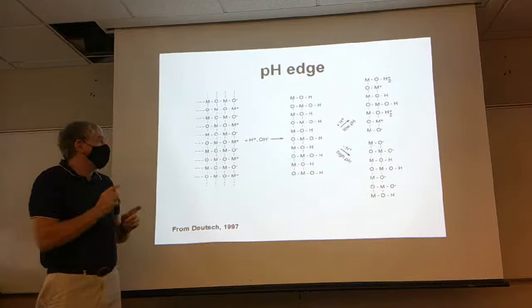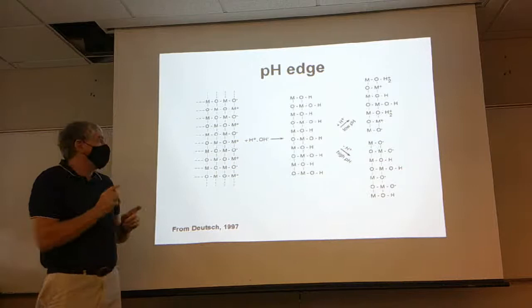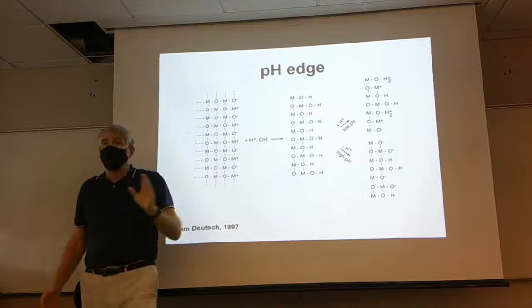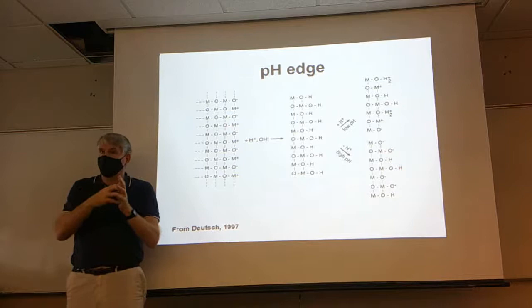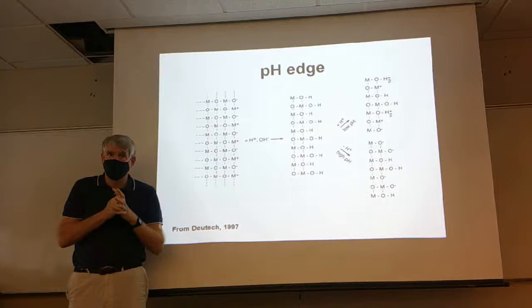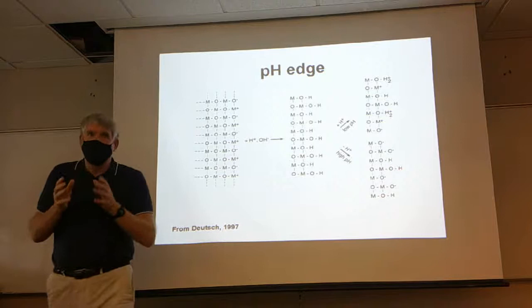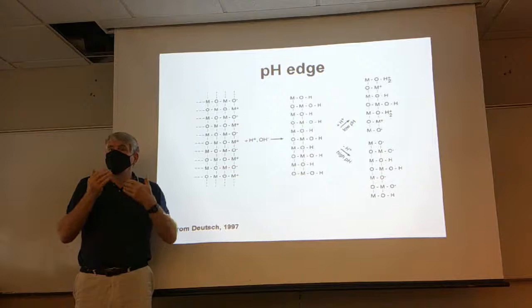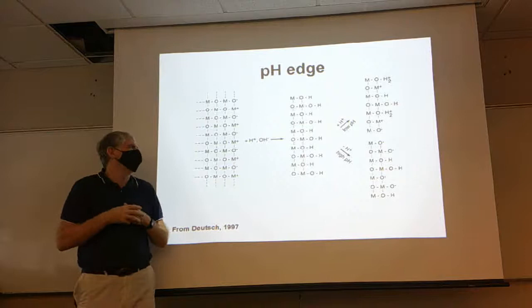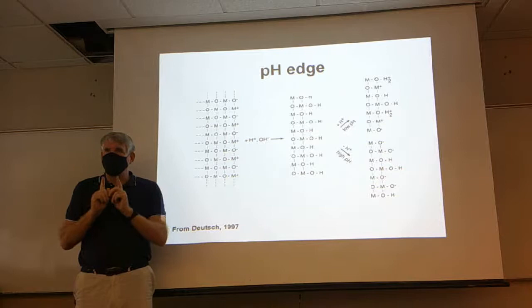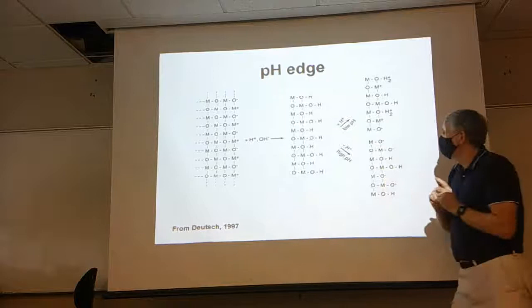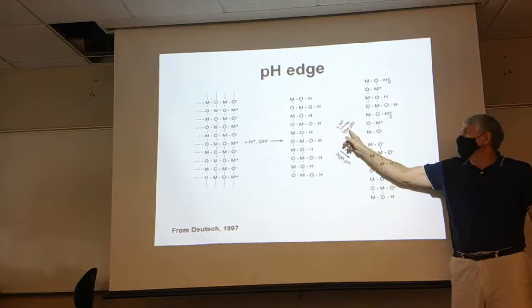There is a pH for every mineral — it's going to vary from mineral to mineral — at which the charge on the mineral surface is perfectly balanced by hydronium and hydroxide ions. We're going to call that the point of zero charge. For every mineral out there, there is a pH at which we're not going to have a net charge on that mineral surface.